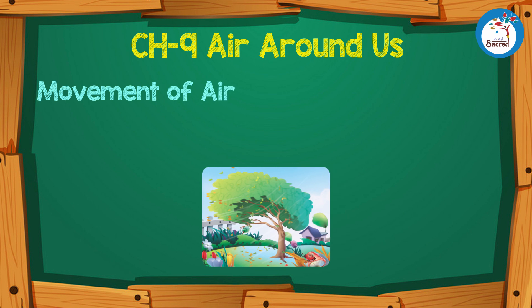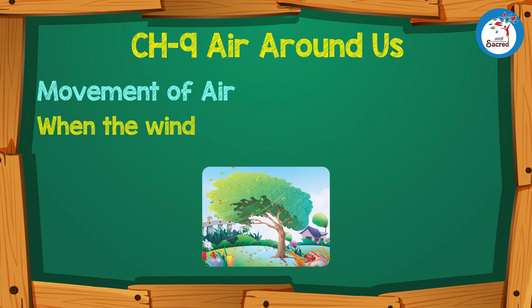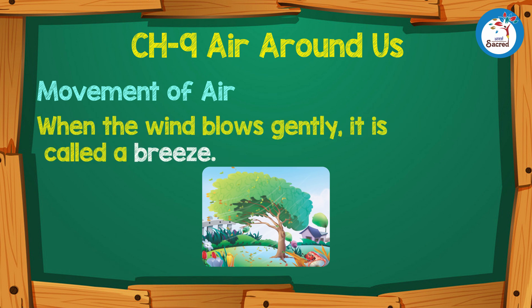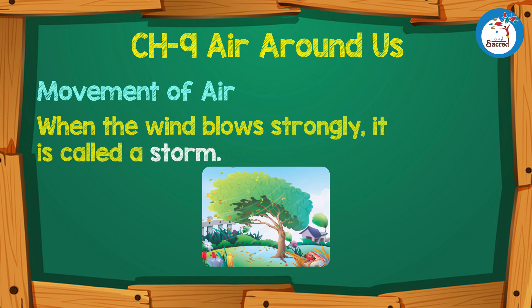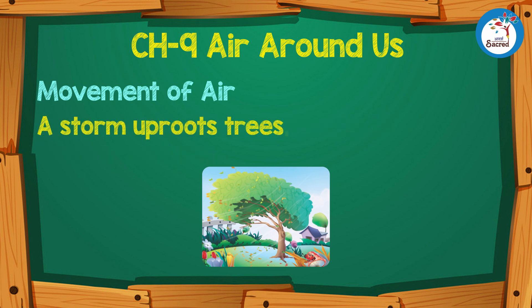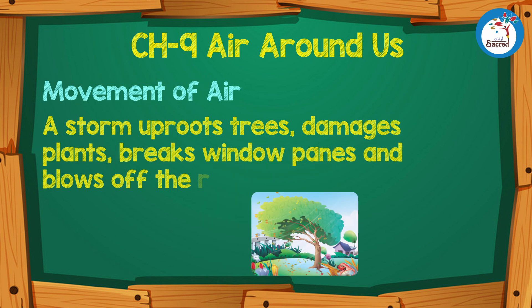Movement of Air: Moving air is called wind. The heat of the sun causes wind to blow. When the wind blows gently, it is called a breeze. When the wind blows strongly, it is called a storm. A storm uproots trees, damages plants, breaks window panes and blows off the roofs of huts.